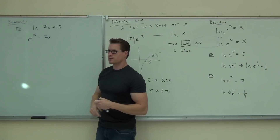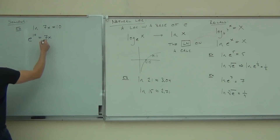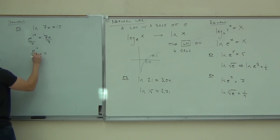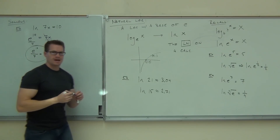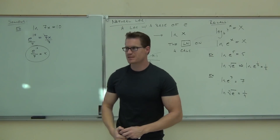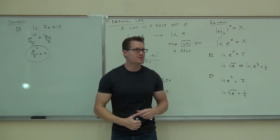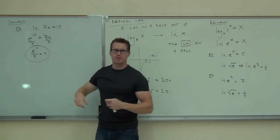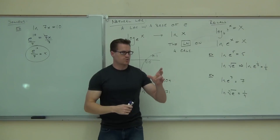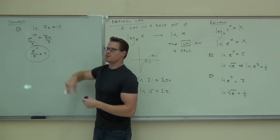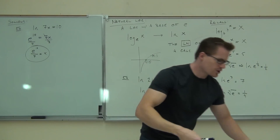Can you solve E to the tenth equals 7x for x? Get x by itself — divide both sides by 7. You get: x = E to the tenth over 7. That's it — you're done. Is it hard? The hardest part is remembering that you have to write the logarithm as an exponential to solve it. Once you do that, it's very easy to solve.